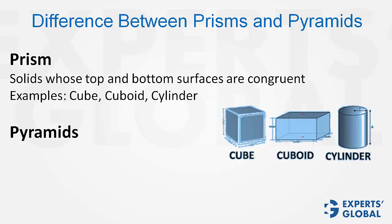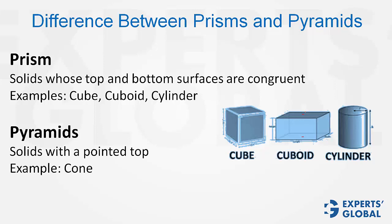Whereas in case of pyramids, the solids have a pointed top. For example, cone. There is a base and the top is pointed, and therefore this solid is a pyramid. The base may take different forms — it may take a square form, a rectangular form, a triangular form. As long as the top is pointed, the solid is a pyramid.